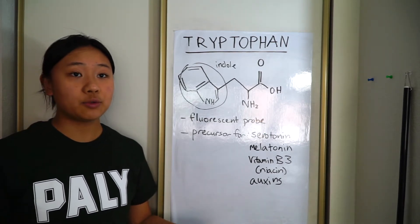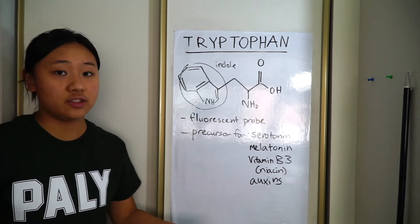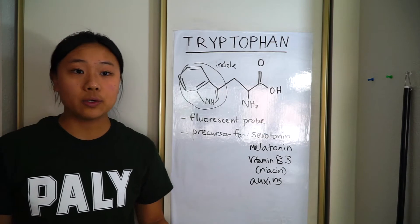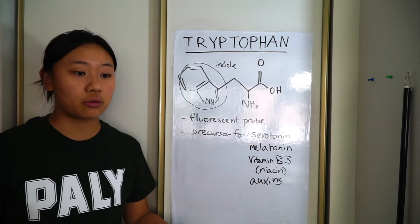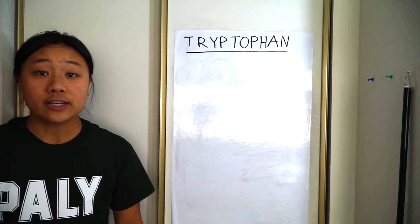This vitamin helps with metabolism. And auxins, which are plant hormones that help the plant grow towards where the light source is so the plant can grow taller.